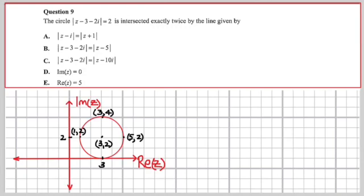I think we'll start at e, which seems to me to be obviously wrong. That is saying to us that x equals 5. Well, that only intersects once, so that's out of contention. Let's go for d, which looks also wrong. That is saying that the y value equals 0, so that's wrong as well.